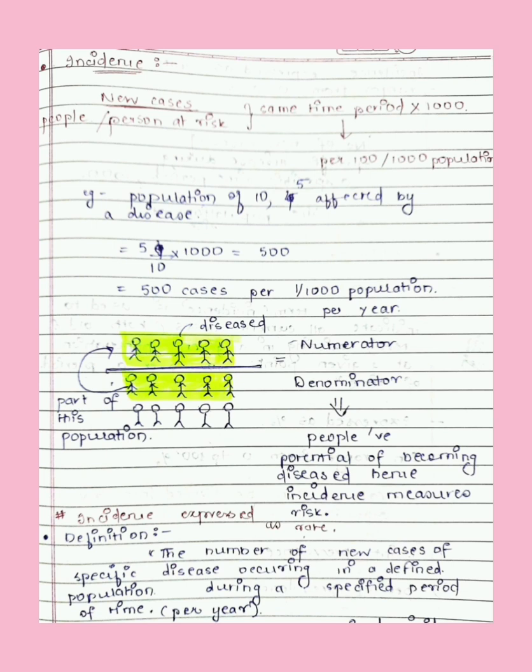The numerator is part of the denominator, expressed per thousand population. For example, there is a population of 10, out of which five people are affected by disease. Those five new detected cases are the numerator, and 10 is the denominator — the total population. So numerator is part of the denominator, and we get 500 cases per thousand population per year.